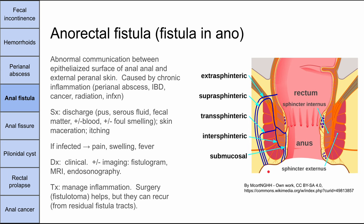Symptoms of anorectal fistula include some kind of discharge — on toilet paper or in the person's underwear. That discharge can be bloody, serous, pus, or fecal matter, and it can be foul smelling. You can have tissue growing in there, bleeding, or serous discharge — essentially passage through the fistula. Skin maceration and itching are also signs. If the fistula becomes infected, like a perianal abscess, you'll have pain, swelling, fever, and more systemic signs if it spreads.